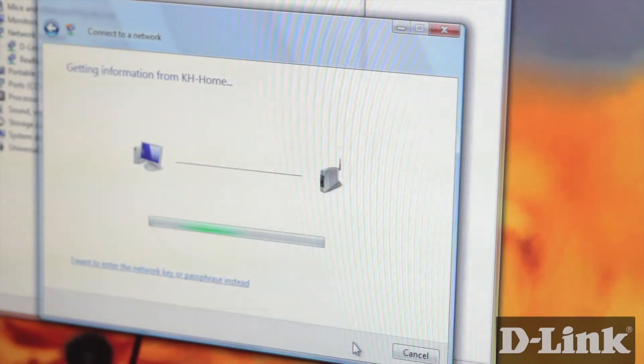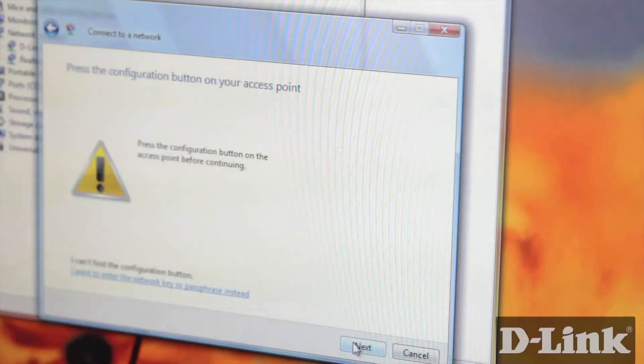If your wireless router supports WPS, Wi-Fi protected setup, like most D-Link routers do, you can simply press the WPS button on your router to easily connect to your wireless network. If not, you can manually enter your wireless security key.